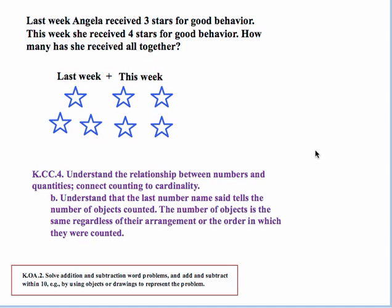Notice here's another connection to a standard in this same grade level. Standard KCC.4 reads: understand the relationship between numbers and quantities — connect counting to cardinality. In particular, standard B says: understand that the last number name said tells the number of objects counted. The number of objects is the same regardless of their arrangement or the order in which they are counted. Notice the connection that when students solve this problem by counting, you're also addressing this standard.